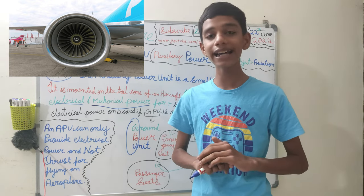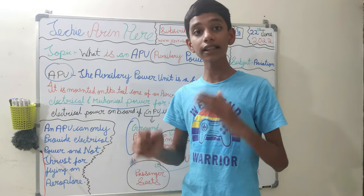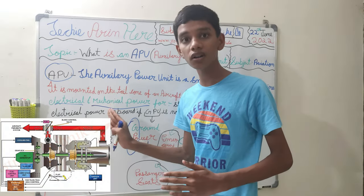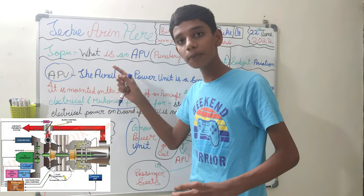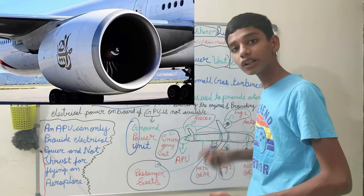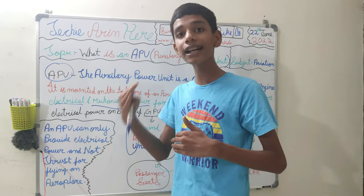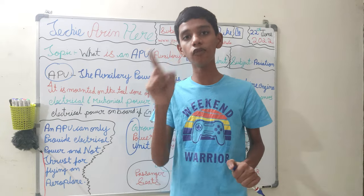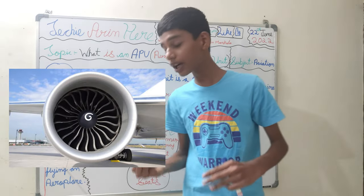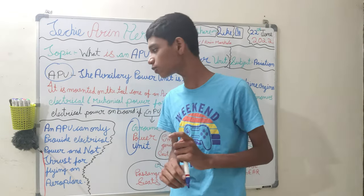As I explained in my jet engine video, the APU is used for starting the engines because the compressor and turbine are interdependent — the turbine needs the compressor to rotate and supply air, while the compressor needs the turbine to rotate first. To break this deadlock, the APU runs the engine for about one minute to initiate the ignition process, after which the APU is shut down. In the air, it is mostly kept off except in emergency situations.